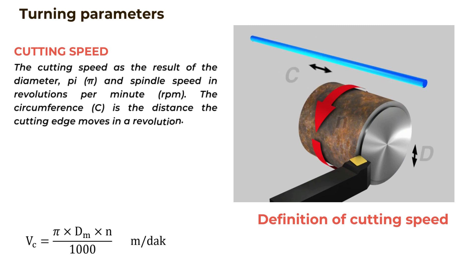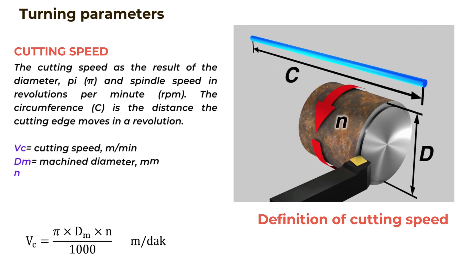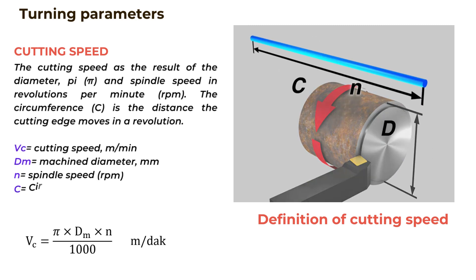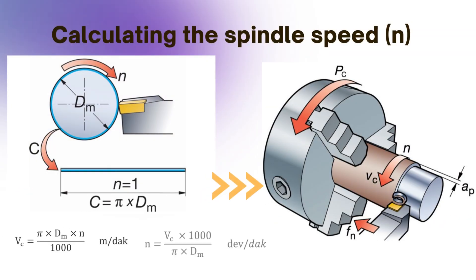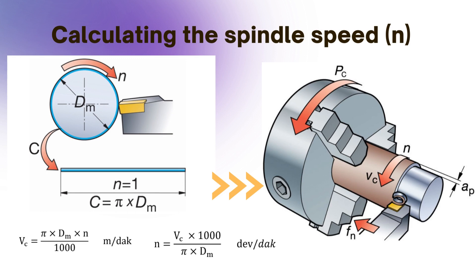In other words, it is the linear length of the removed material from the workpiece in one minute by the cutting tool. In turning, milling, and drilling machines, the rotational speed of the spindle — in other words, the revolution — is calculated using the formula given on the screen.